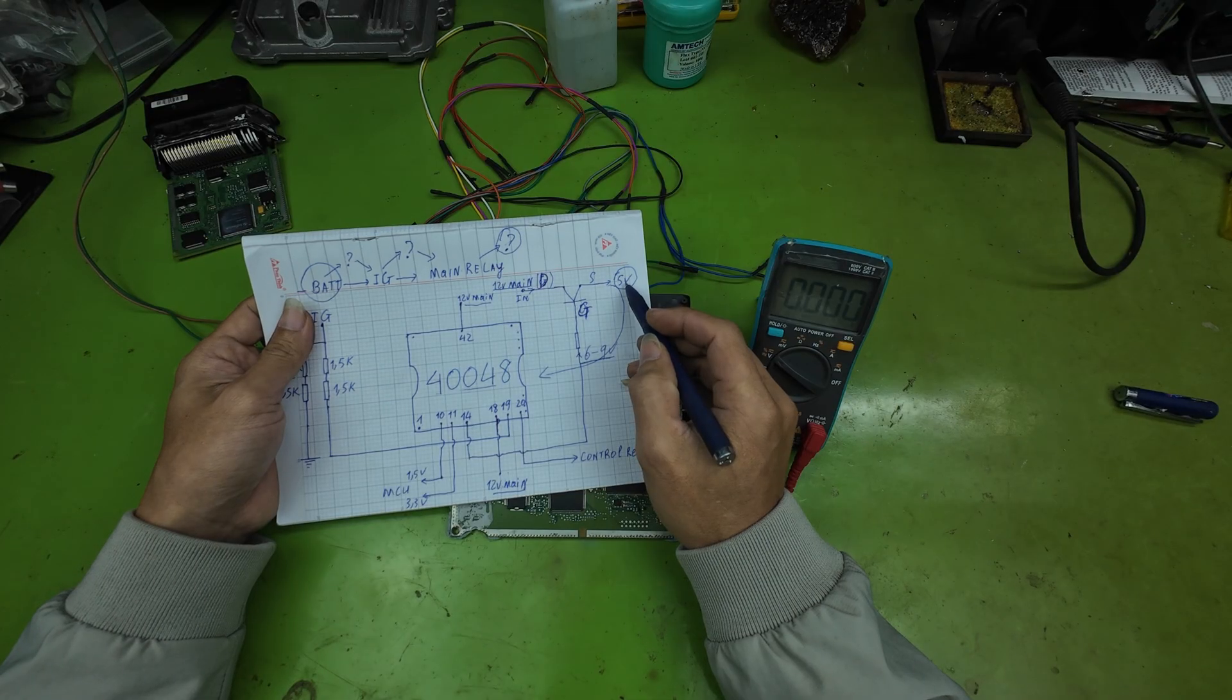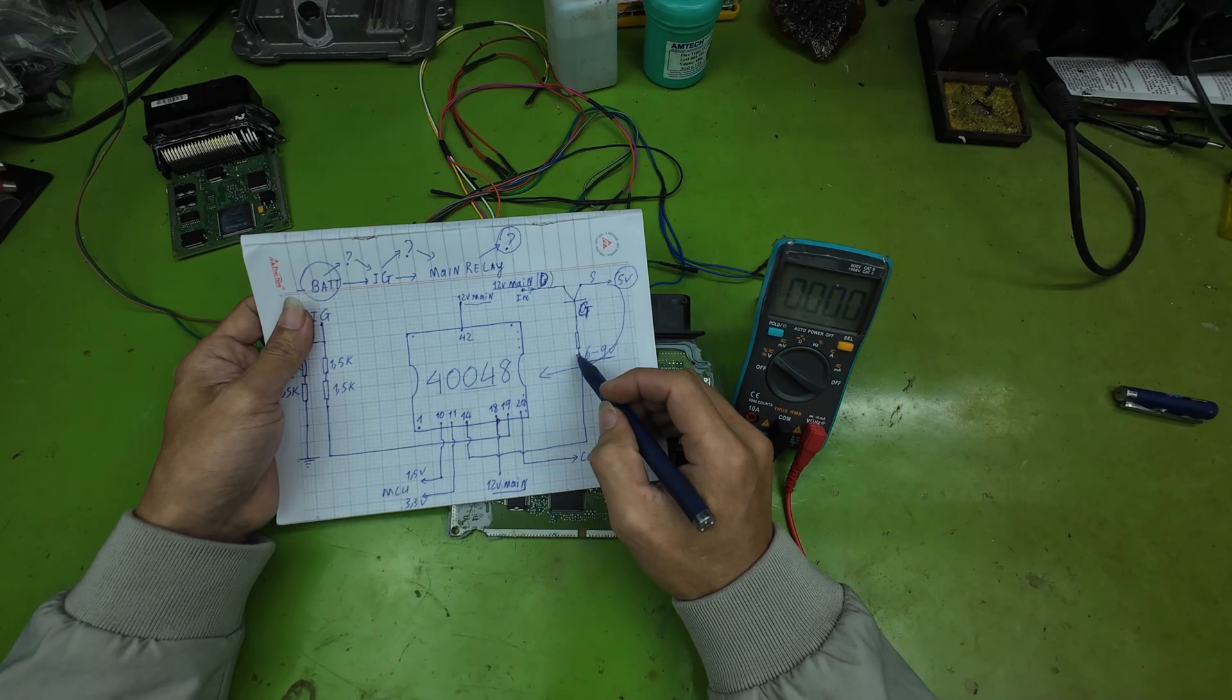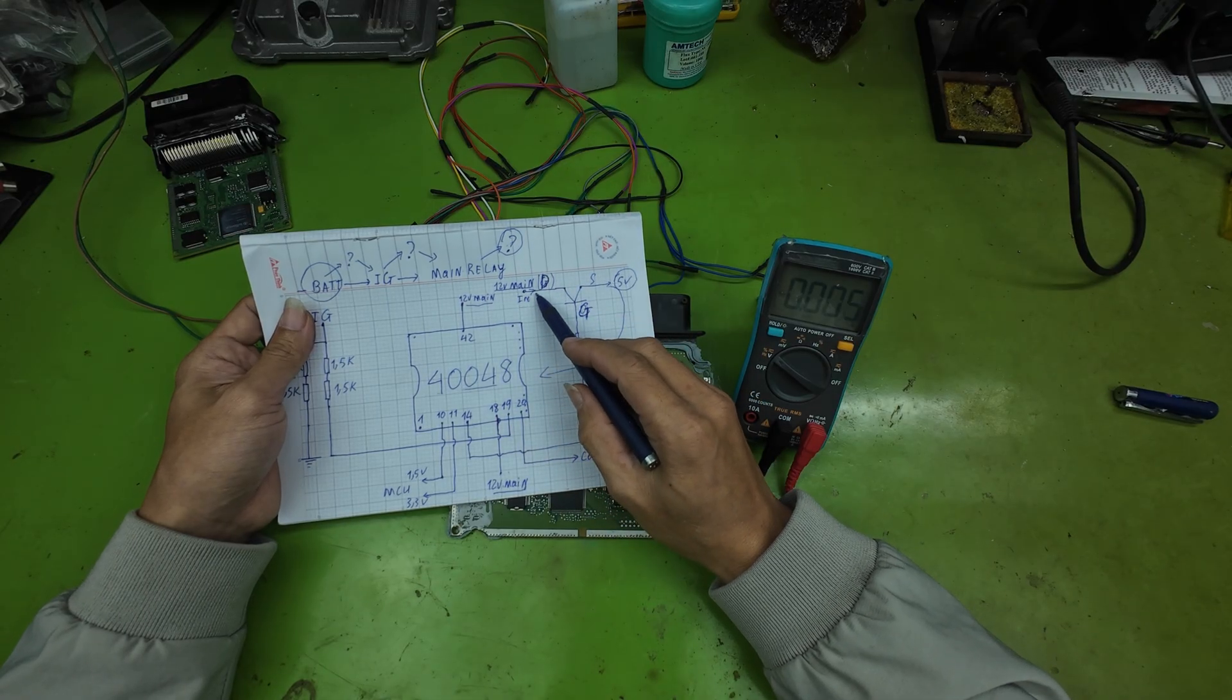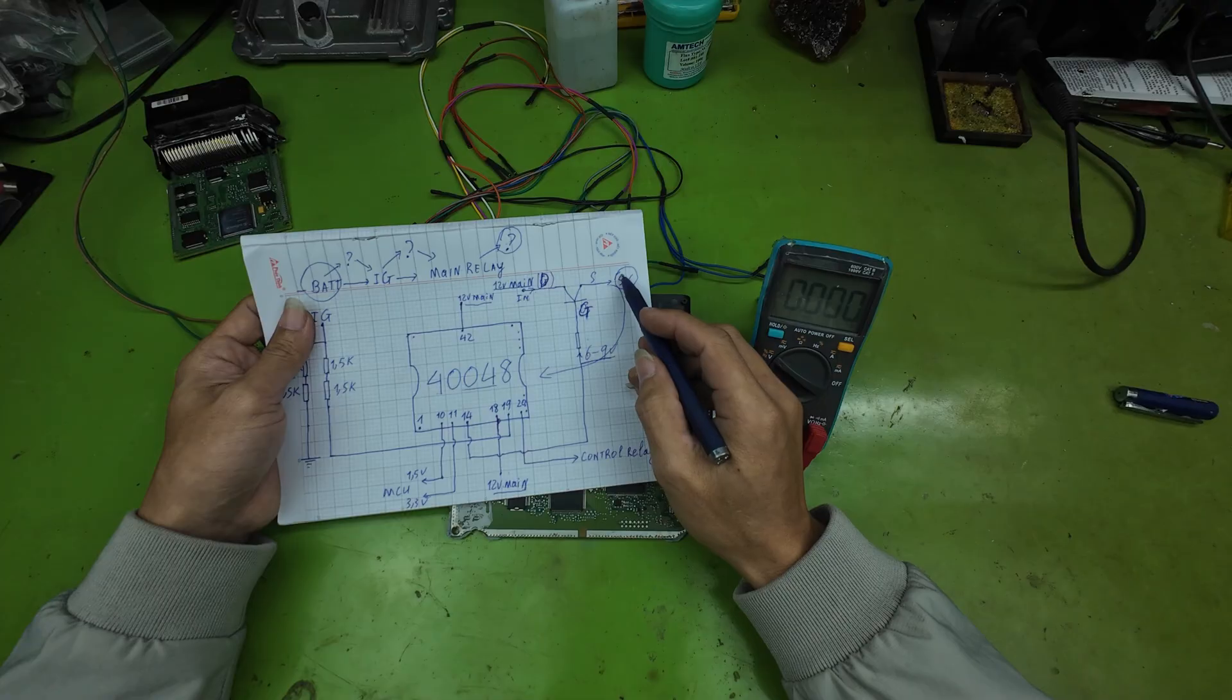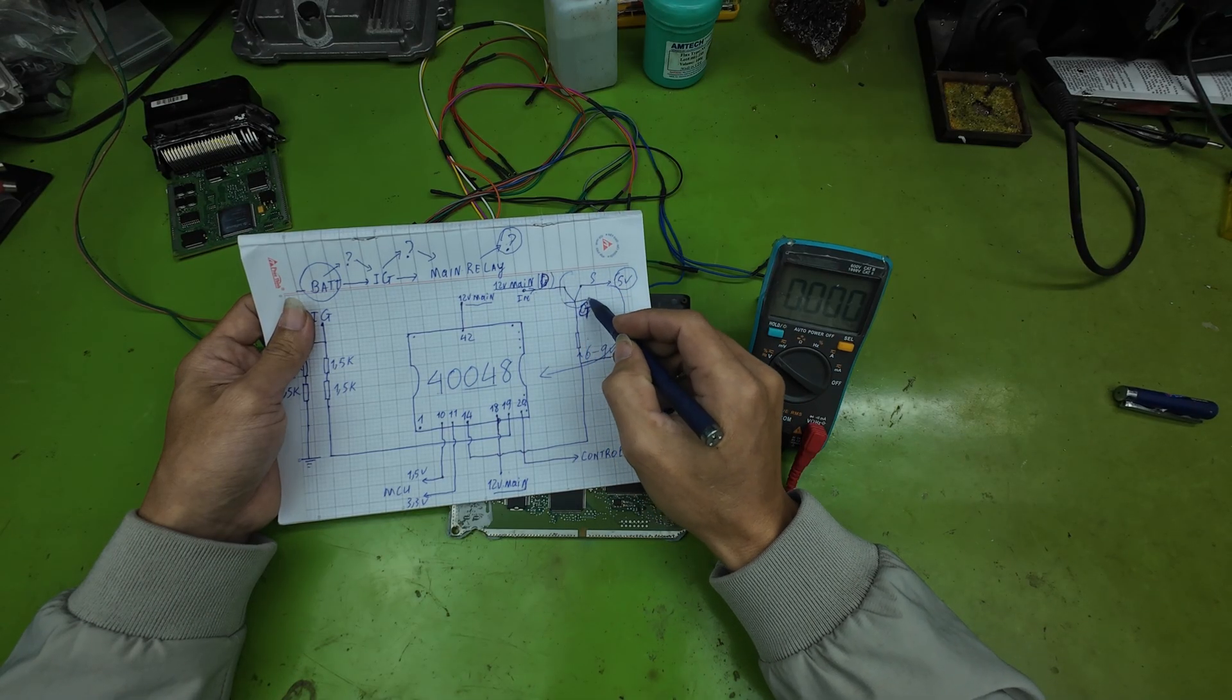If you have 12 volts at D and 6 to 9 volts at G, but no 5 volts at S, you can conclude the MOSFET is faulty, or the 5-volt output line is shorted somewhere.